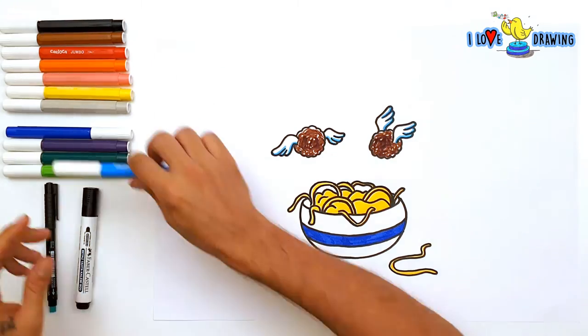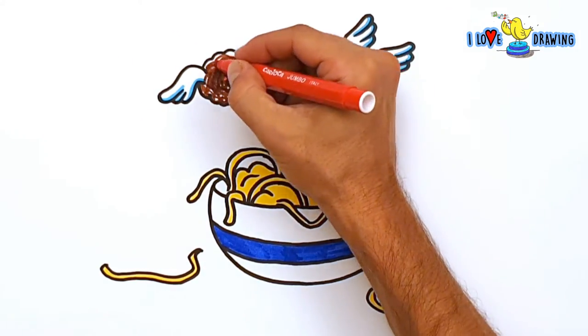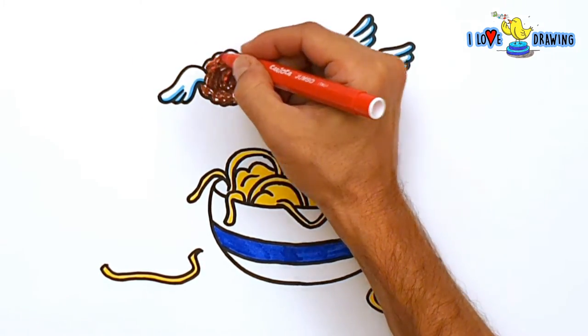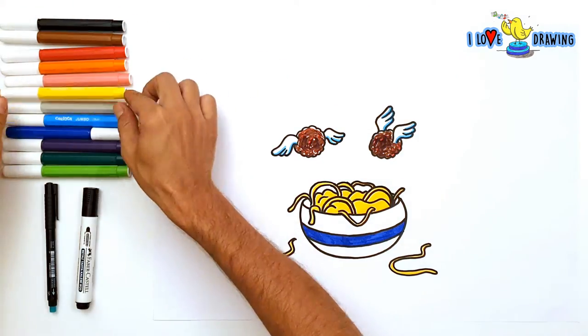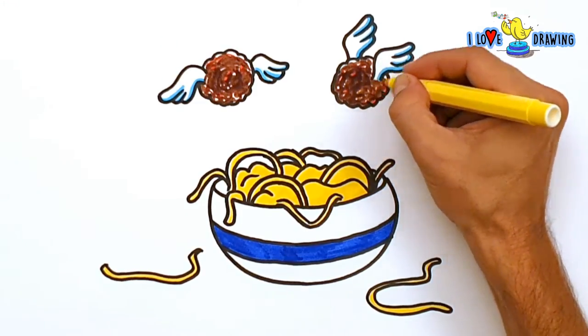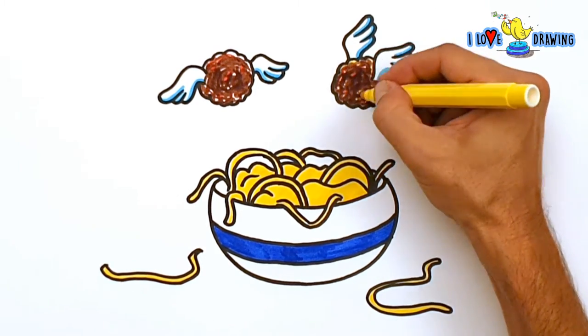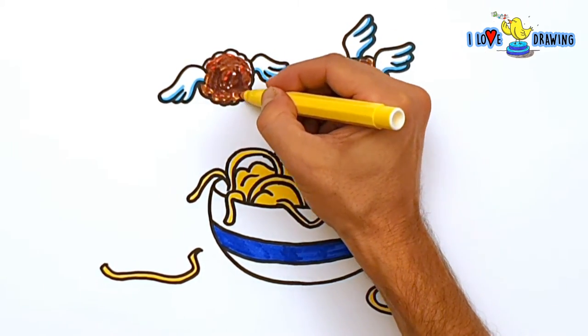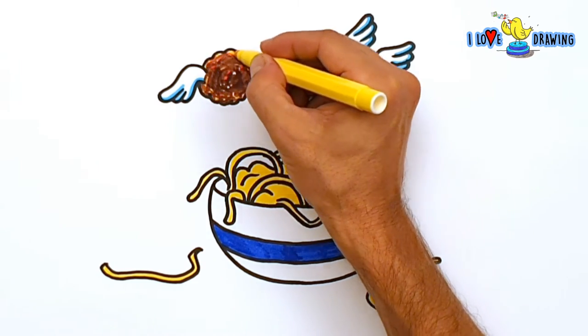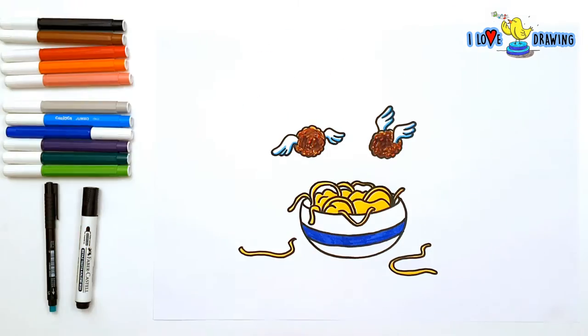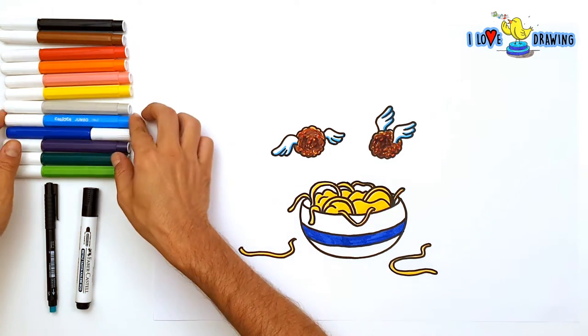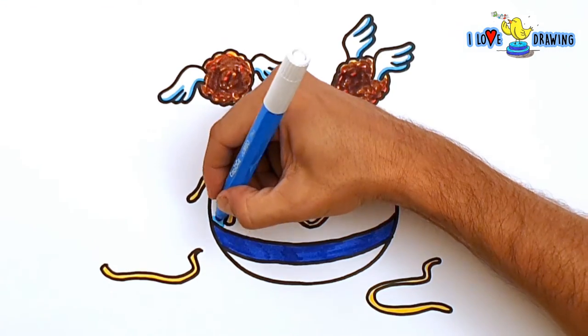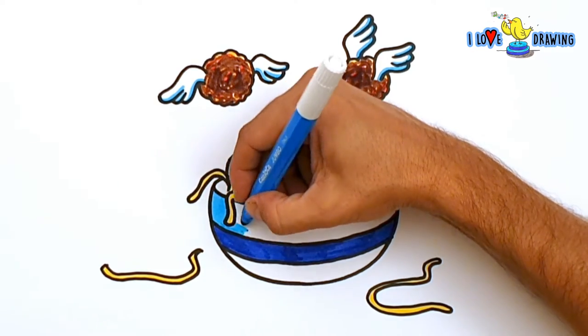So after the meatballs were cooked, her mom picked them up and she whispered in their ears. I mean, meatballs don't have ears, I know kids, but we're just making stuff up. Stay with me for a second. She picked up the meatballs and she whispered, 'Fly meatballs, fly. Go to my daughter. Tell her I said hi. She's just around the corner.'